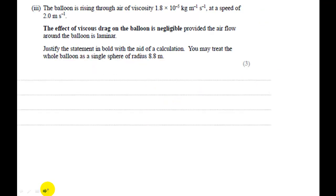Let's look at the next part of the question. Pause the video and read this question. So this question is talking about the balloon rising through air of certain viscosity at a certain speed, a constant speed I would imagine. It says the effect of viscous drag on the balloon is negligible provided the airflow around the balloon is laminar. Justify the statement in bold with aid of calculation. You may treat the balloon as a single sphere of radius 8.8 meters. So what we're talking about here is we're interested in viscous drag.